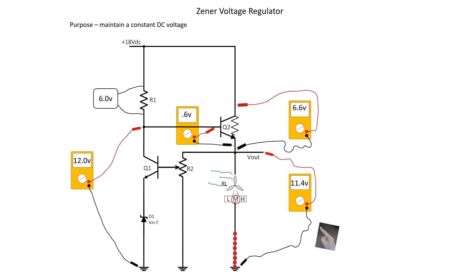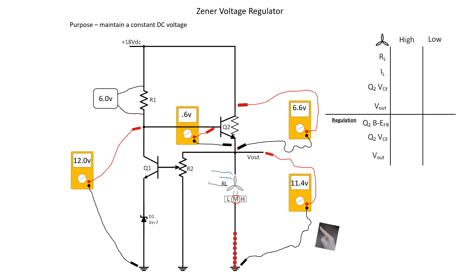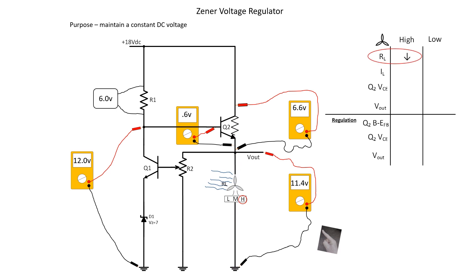Let's kick this thing into high gear and switch it to high speed. To actually increase current flow, I have to decrease the resistance of RL — look how much more current flow we have now. With more current flowing through Q2, you're going to see the voltage drop emitter to collector go up, and since that went up, we have to bring down our voltage out, because we have to add up to the applied voltage. And you're probably wondering — we didn't maintain a constant DC voltage, but wait, there's more.